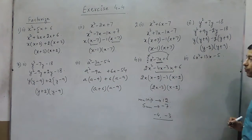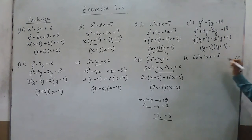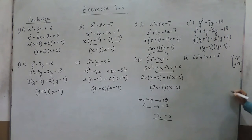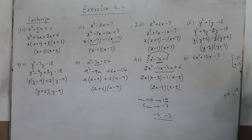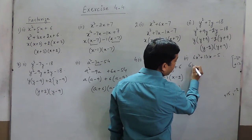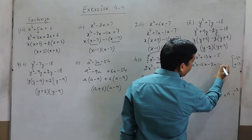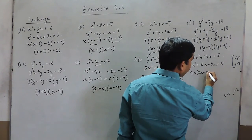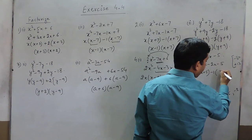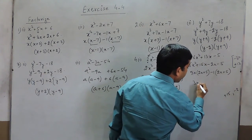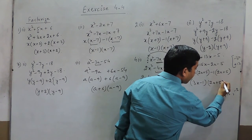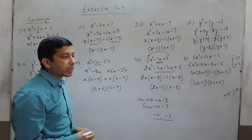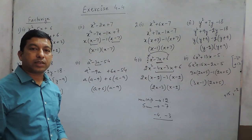In question number 4, second part, the multiplication should be minus 30 (6 multiplied by minus 5) and the sum should be 13. The two factors are plus 15 and minus 2, so that the sum is 13 and the product is minus 30. We write 6x squared plus 15x minus 2x minus 5. Taking 3x common gives 2x plus 5, and taking minus 1 common also gives 2x plus 5. So the factors are 3x minus 1 and 2x plus 5. This way we can solve the first four questions; in the next class we will cover the remaining ones. Thank you.